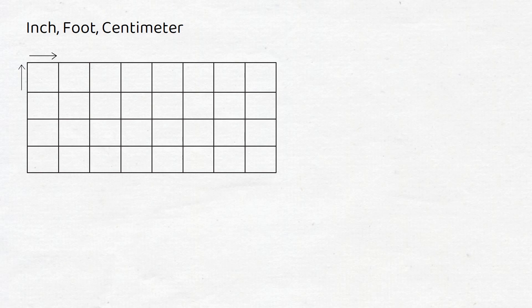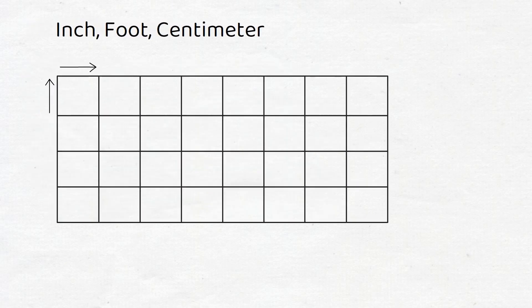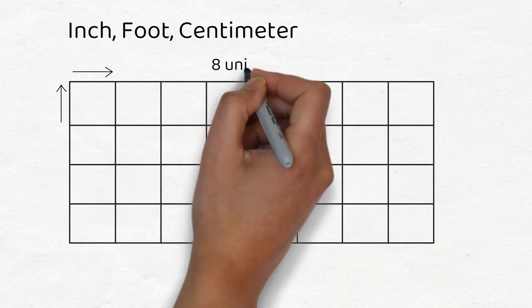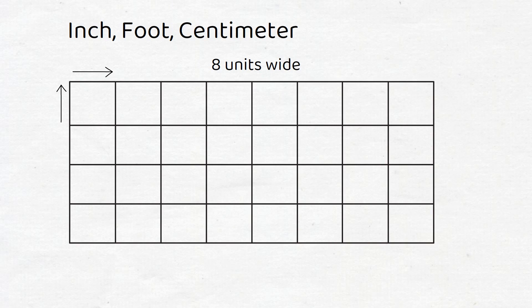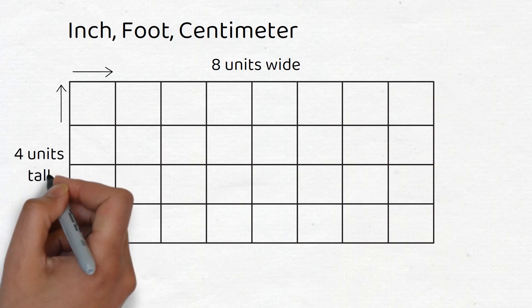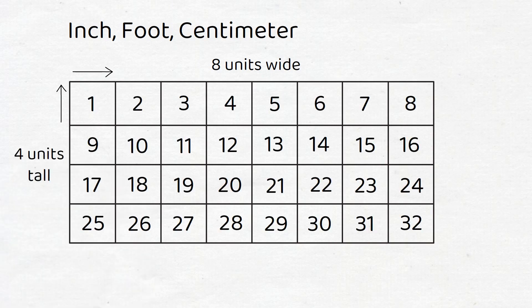For example, consider this rectangle. Each of the little squares are a unit square. As the rectangle is 8 units wide and 4 units tall, the total number of squares that this rectangle is made out of is 8 times 4, or 32 unit squares.